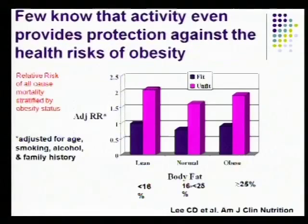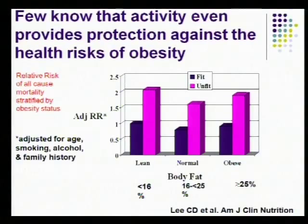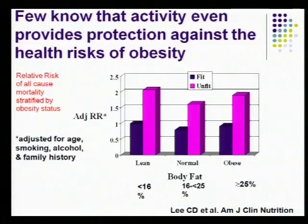This basically takes the same comparison — fit versus unfit, bottom quintile versus everybody else — and stratifies results by lean, normal, and obese. The main message is that regardless of your obesity status, if you're fit, your relative risk is relatively low. If you're inactive or unfit, regardless of your body type, you're at greater risk. Numerous studies have confirmed this — not just with obesity or all-cause mortality, but with diabetes, cancer, and a whole host of other conditions. Physical fitness provides protection against the health risks of obesity, and I think this is underappreciated.